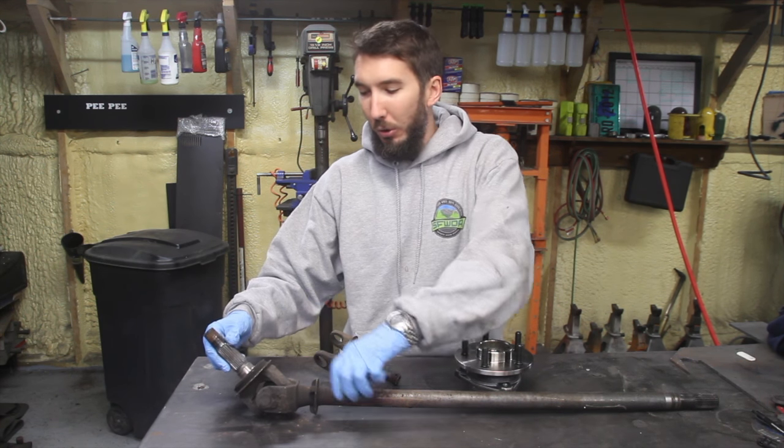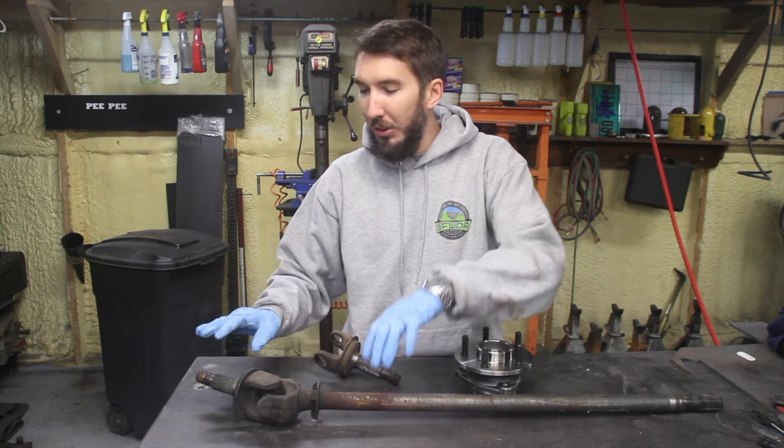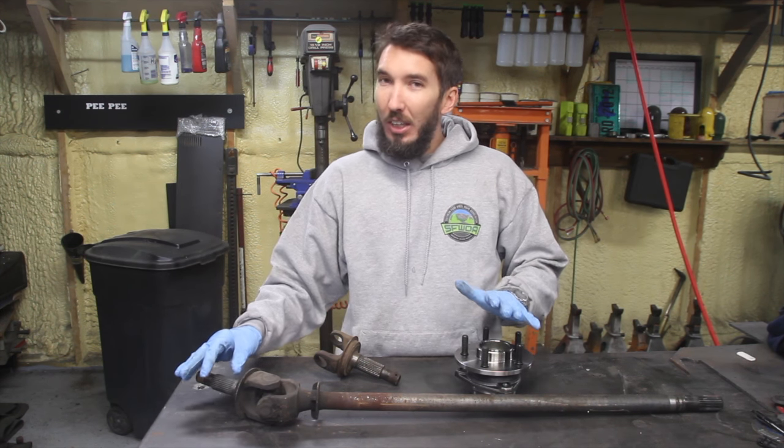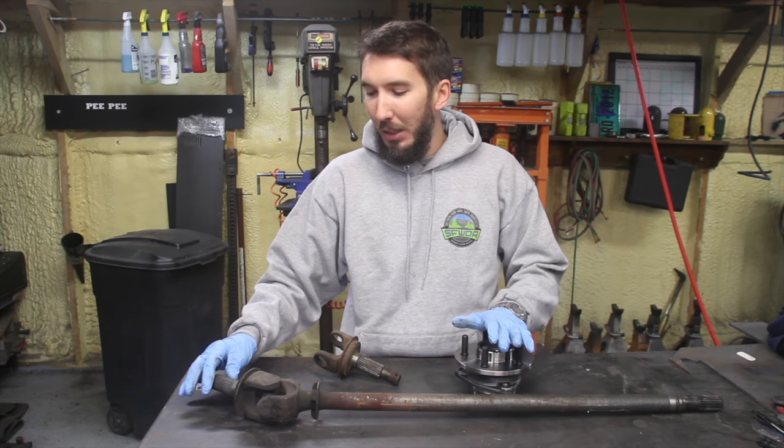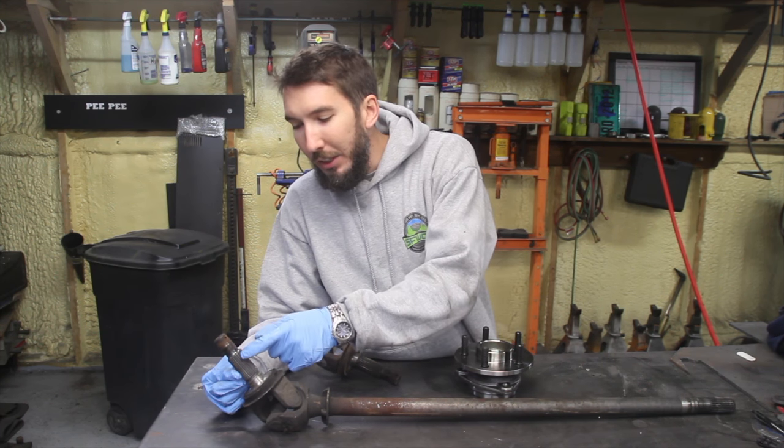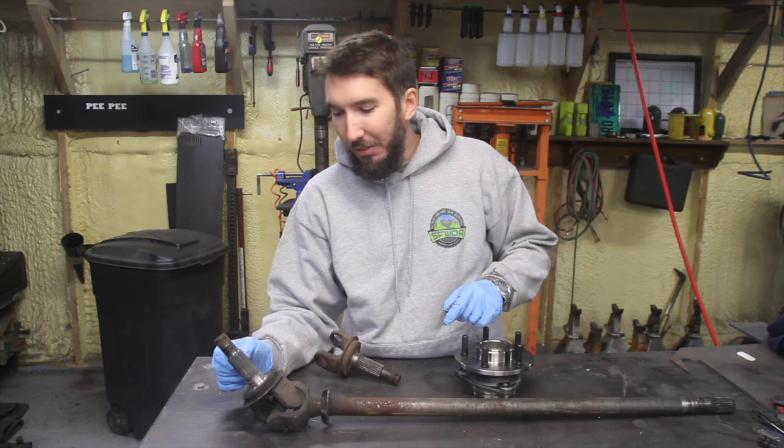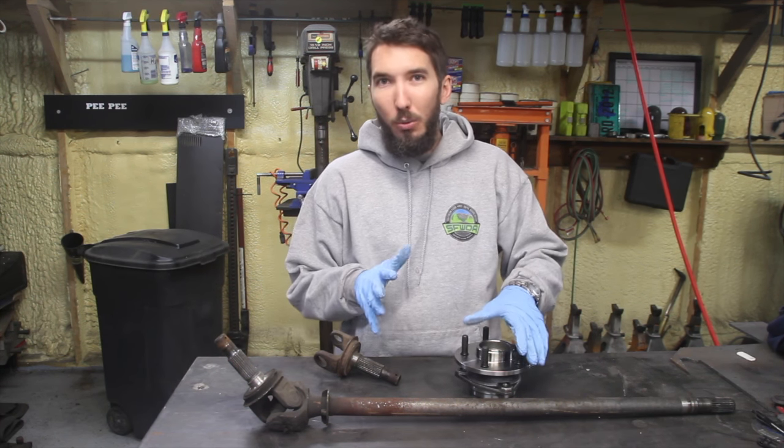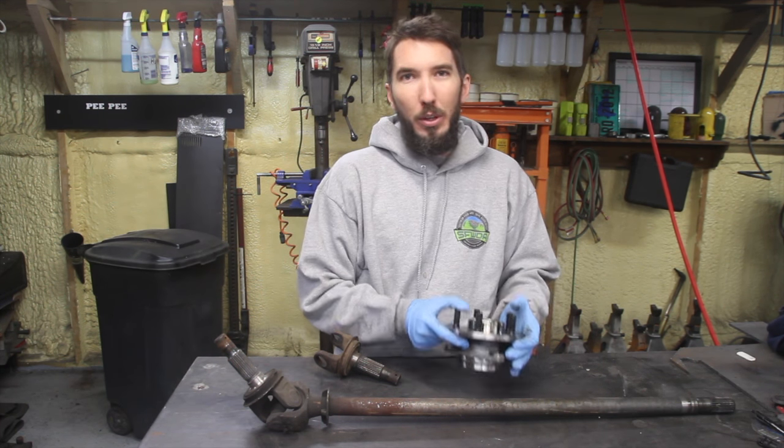And this is what's called the outer axle shaft right here, or the stub shaft. So the stub shaft stock has 27 splines. So if you were to count each one of these little splines right here, there would be 27 of them.